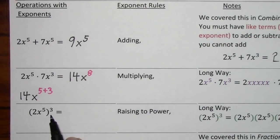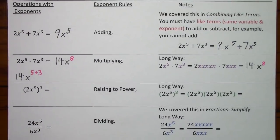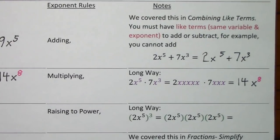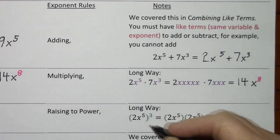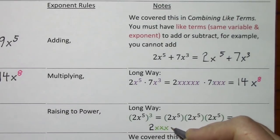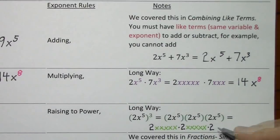With our next example, we're raising to a power. First, looking at the long way, 2x to the fifth all raised to the third can be written in this manner. If I want to expand on this, here we would have 2 times 2 is 4 times 2 is 8. So this would give us 8x to the 5, 10, 15.